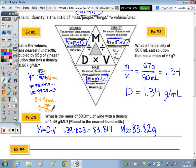Number three: what is the mass of 60.3 milliliters of wine with a density of 1.3 grams per milliliter? This should be a lowercase m, round to the nearest hundredth. The mass is correct, 83.82 grams approximately.